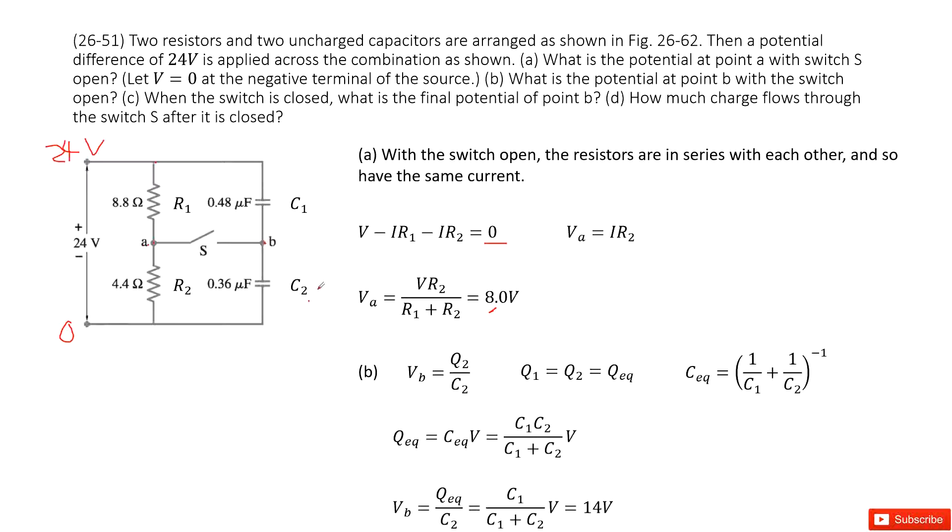So this is the voltage across the capacitor C2, Q2 divided by C2. C2 is given, looks like we need to find Q1, Q2. As we can see in these branches, the current is conserved. So Q1 equal to Q2 equal to equivalent Q.